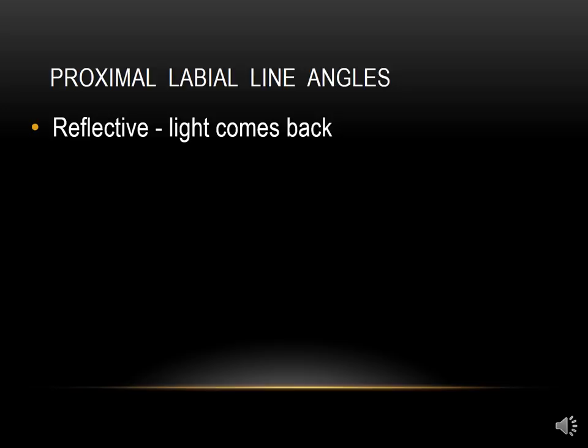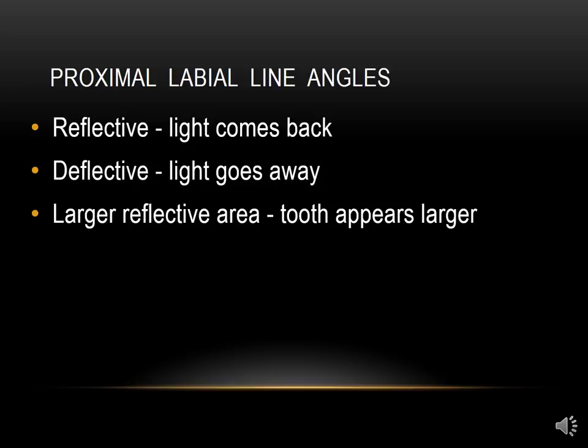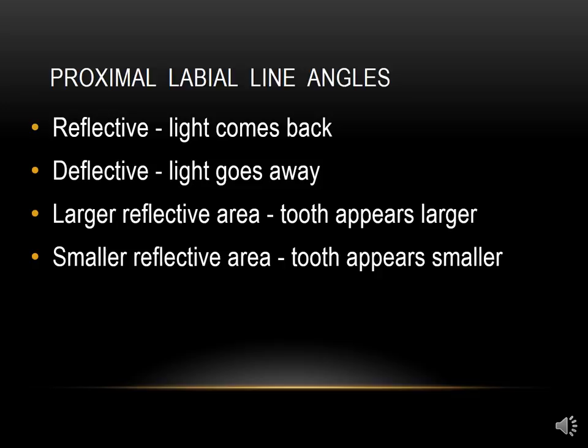Proximal labial line angles: the reflective light comes back, the deflective light goes away. The larger the reflective area, the tooth appears to be larger. Smaller reflective area, the tooth appears smaller.